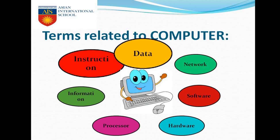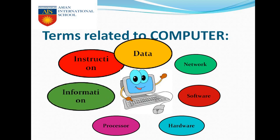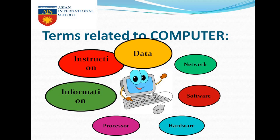Next, instruction. Instruction is the information given to the computer to perform a task. Next is information. Now we have data, we have instruction. We will apply the instruction on the data to get the information. That means information is actually the processed data.